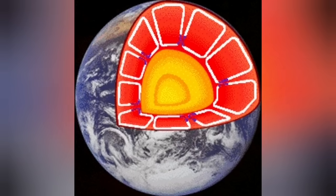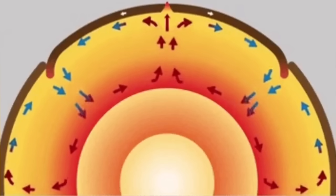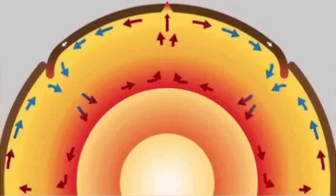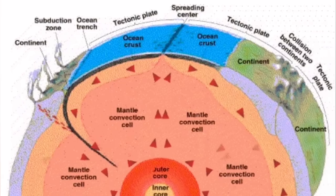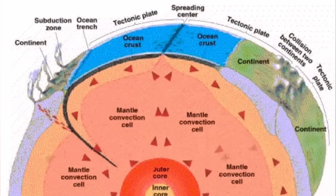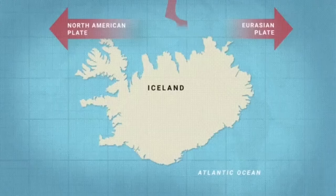This heat creates convection cells through the mantle of the Earth, which rise to the surface and crack the hardened solidified crust, the lithosphere. Through these cracks, magma can erupt.